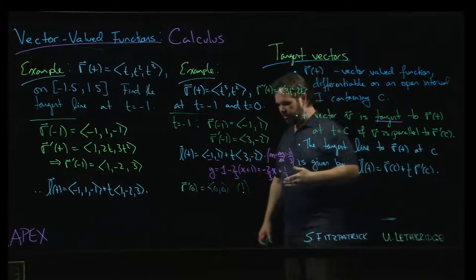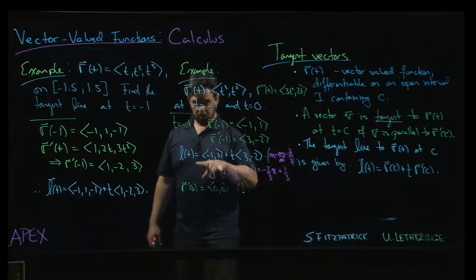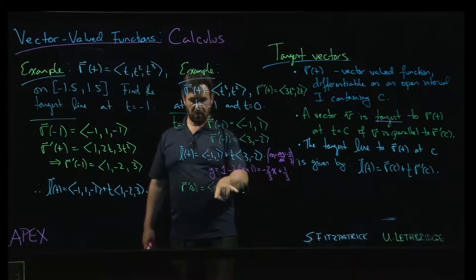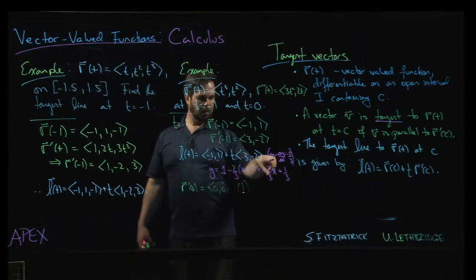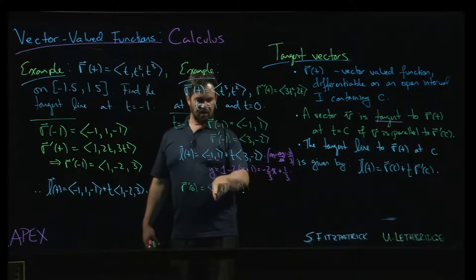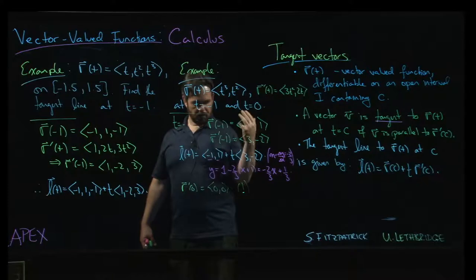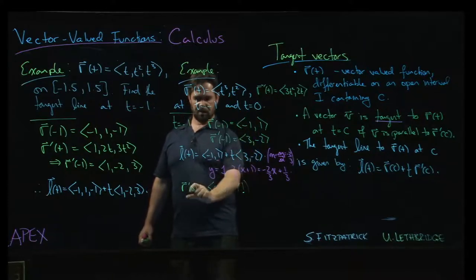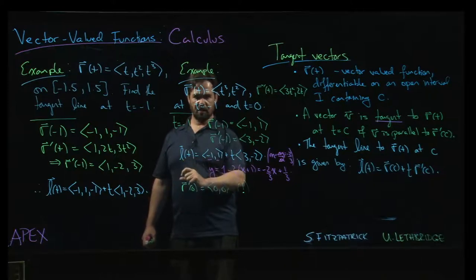What is this trying to tell us? What is it trying to tell us that the derivative is the 0 vector at that point, right? Well, if we think about slope, right, if we think of this as rise and run, you know, for slope, 0 over 0, it's undefined. Slope is undefined. So the tangent line is undefined.